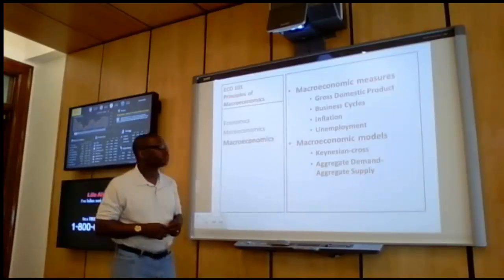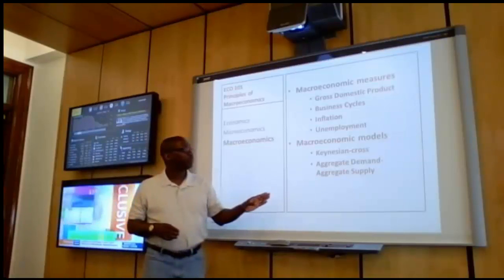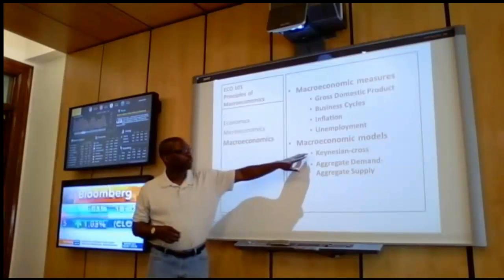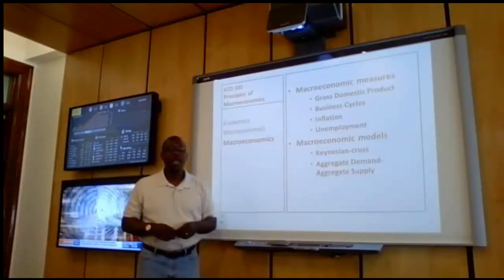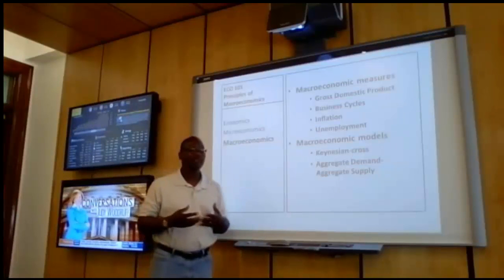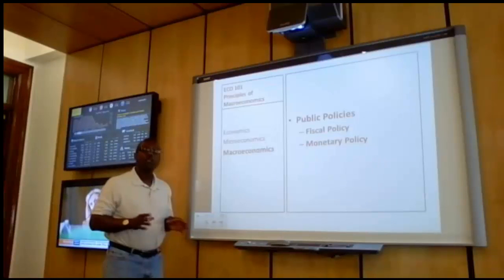Once we have discussed the macroeconomic measures, we're going to begin to build two interrelated macroeconomic models. One is going to be referred to as the Keynesian Cross. The second is going to be referred to as the Aggregate Demand Aggregate Supply Model. These two models are interrelated and we're going to talk about the common denominators between these two models. Once we have discussed the two interrelated macroeconomic models, we are then going to be in position to discuss macroeconomic public policies.